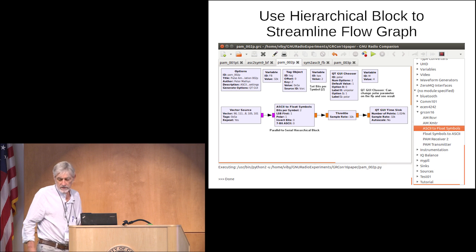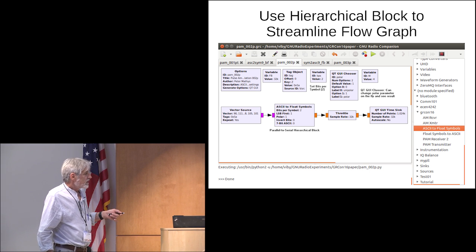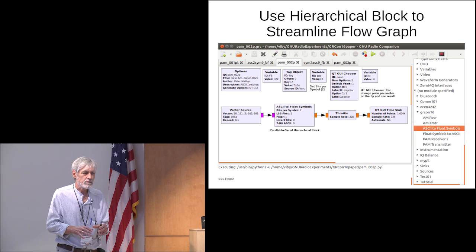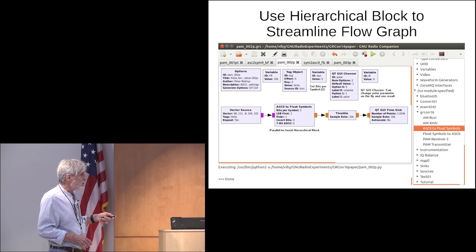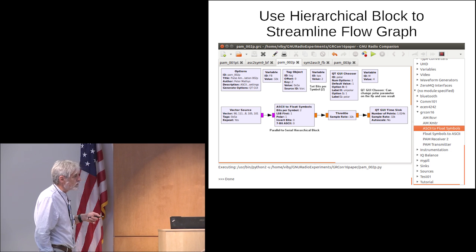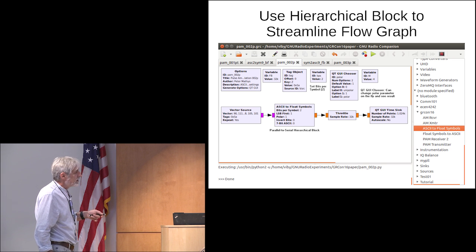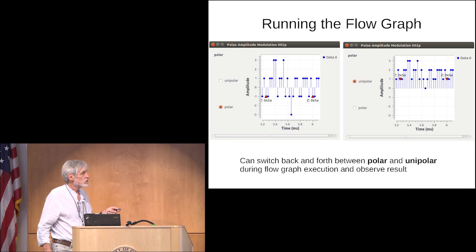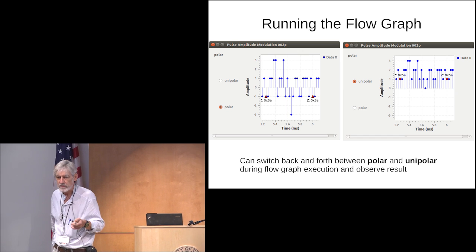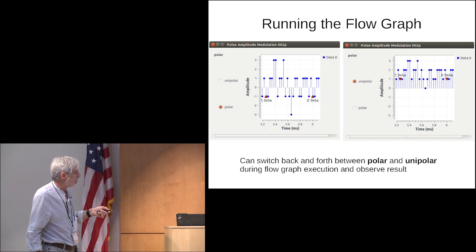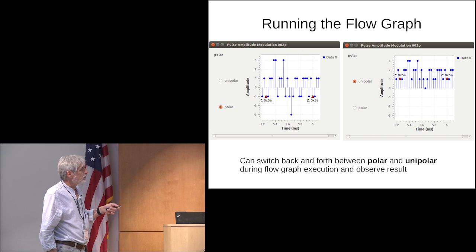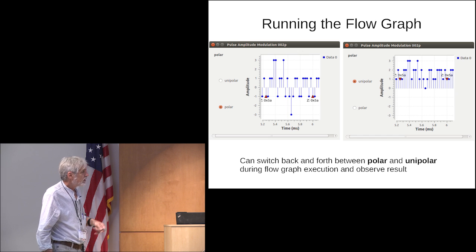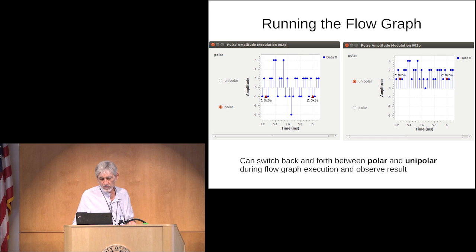Once we have this block, we can include it in a GNU Radio flow graph as just one block. The idea is that we first looked at the details of what's inside that block; once we understand it, we don't want to deal with all the details every time — we just make it into a block and continue investigating other things. Here we show the graphs when putting two bits per symbol: for polar symbols you get minus three, minus one, plus one, and plus three; for unipolar signals you get zero, one, two, and three. We can select on the fly in class or as students work with it to show the difference between polar and unipolar.